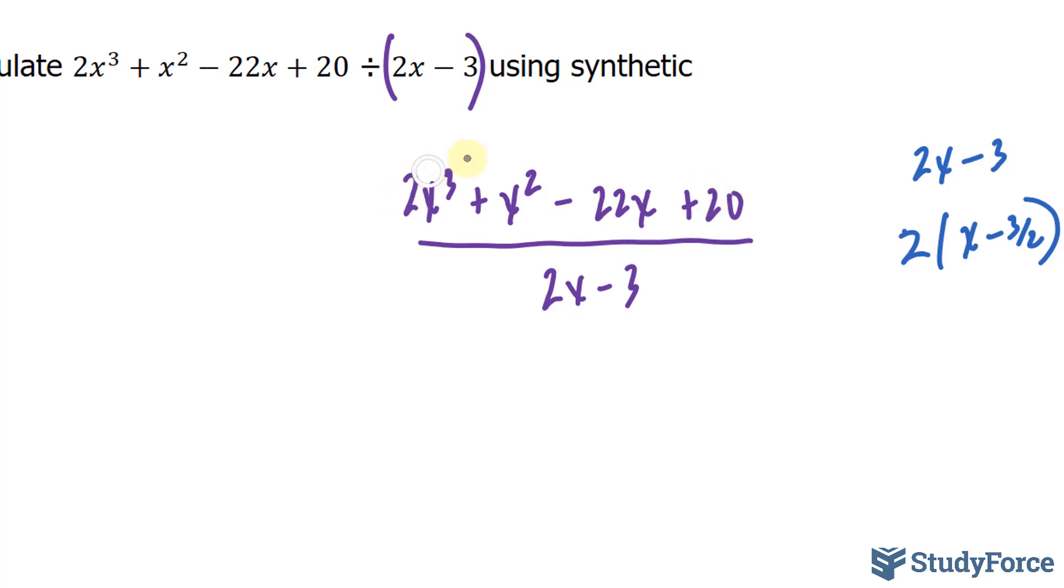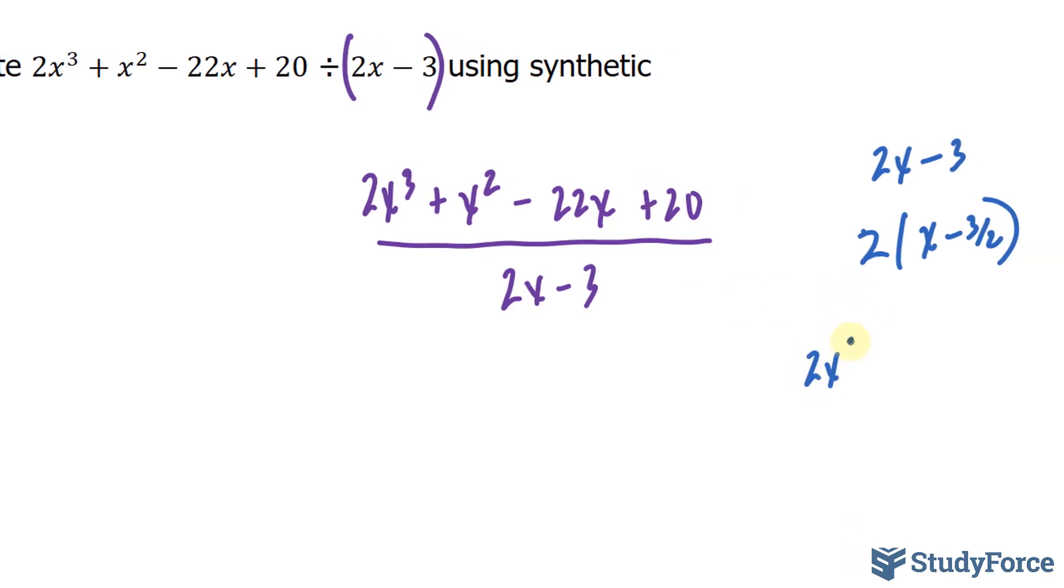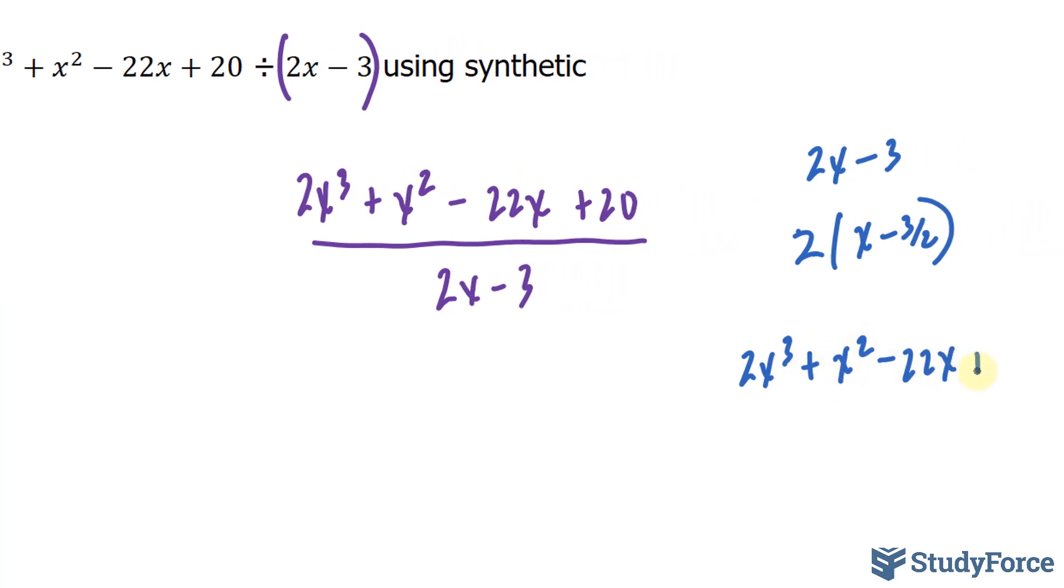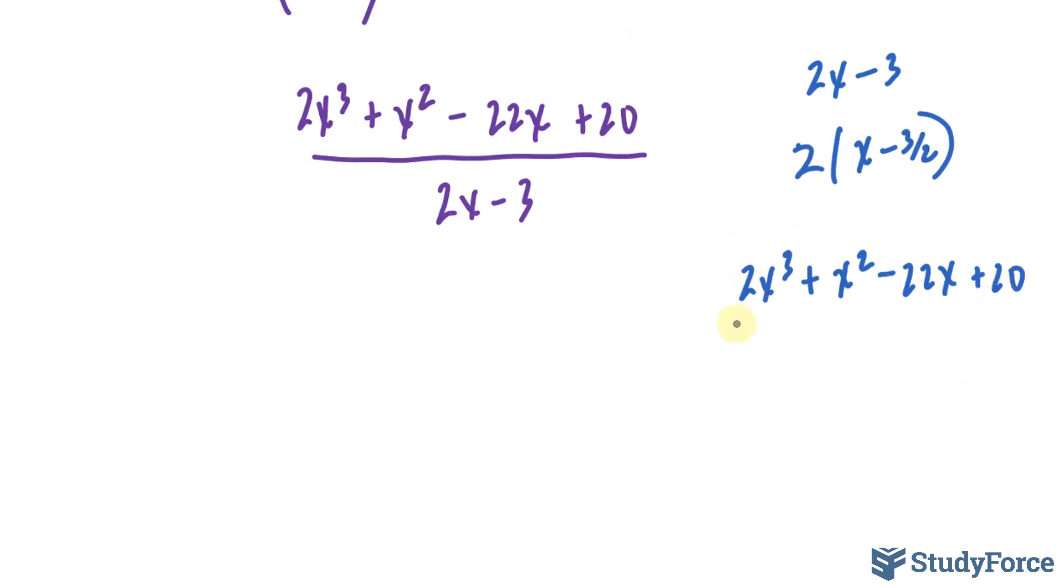So I'll do the same thing for the top expression. That is, I'll factor out a 2 from each of these individual terms. Let me rewrite that top expression. If I factor out a 2 from each, I have a common factor of 2, and I'm left with x cubed plus 1/2 x squared minus 11x plus 10.